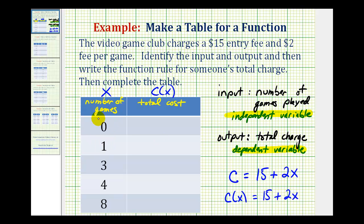So if someone plays zero games using our function rule, we substitute zero for X, we'd have 15 plus 2 times zero, which is equal to 15, and the units are dollars.